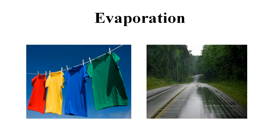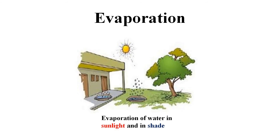Let us do an activity to understand the process of evaporation. For this activity, we take two similar plates. We place one plate in sunlight and keep the other under shade. When we pour equal amounts of water in each plate and observe both plates after every 15 minutes, we find that water is disappearing from both plates, but faster from the one kept in sunlight. It means that in sunlight, evaporation takes place faster. Water also disappears from the plate kept in shade, but it takes more time.